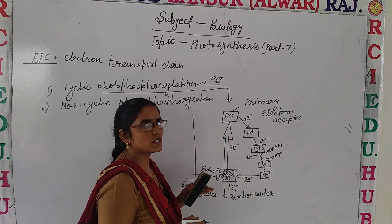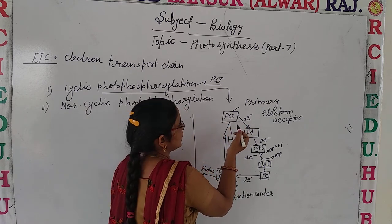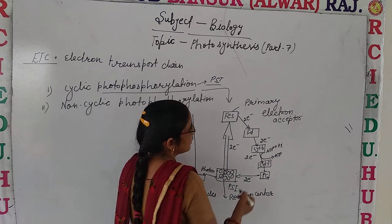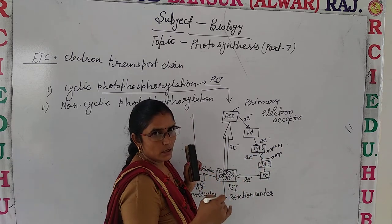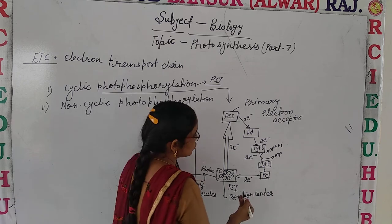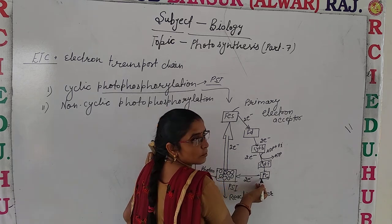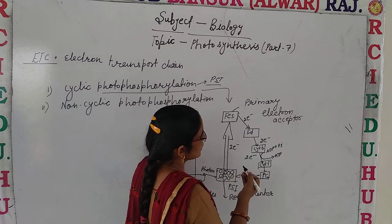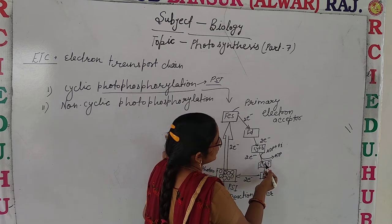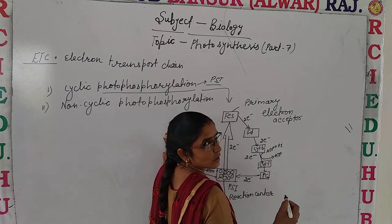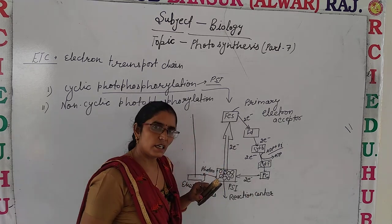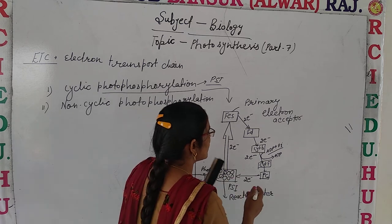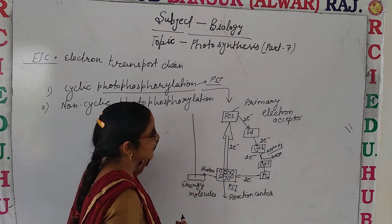The primary electron acceptor is the iron-sulfur protein (FS). From there, electrons are passed to ferredoxin, then to cytochrome B, then to cytochrome F, and then to plastocyanin. From plastocyanin, they return back to PS1. One important point: in between cytochrome B and cytochrome F, energy is utilized in the formation of ATP.